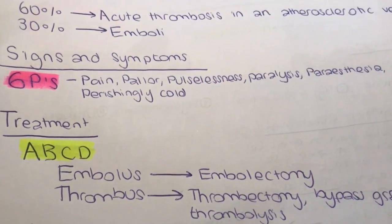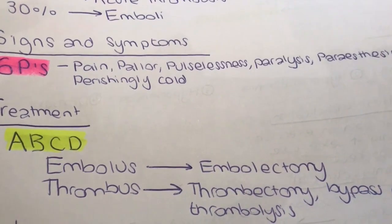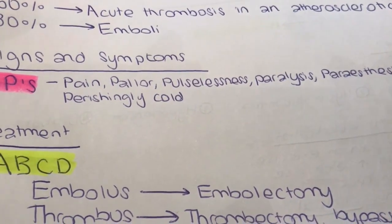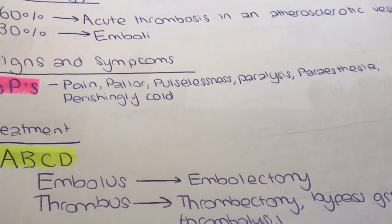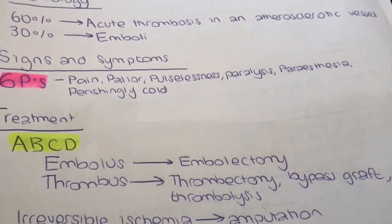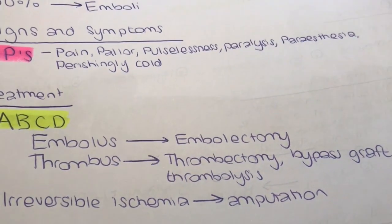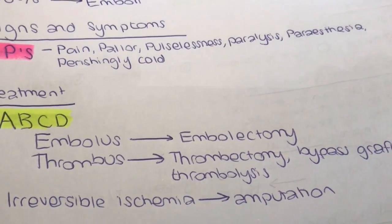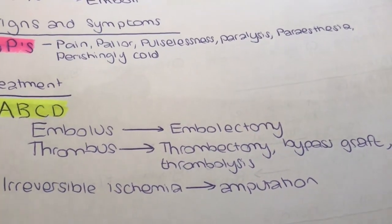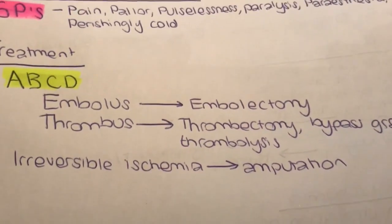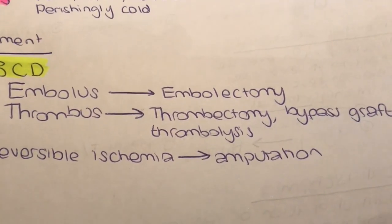Because this is an acute presentation, we always start with ABCD — make sure the patient is breathing, give oxygen, get IV access, take bloods, and provide pain relief. Once the patient is stable, there are two main treatment options depending on the etiology. If there's an embolus, this is a clinical diagnosis and the embolus can be removed by embolectomy. If there's a thrombus, an angiogram is normally done to gain more information about the cause.